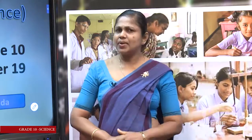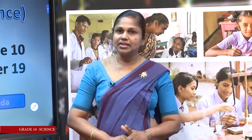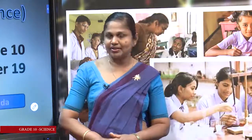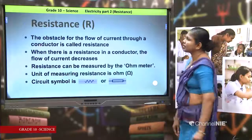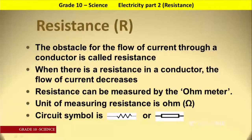Today we are going to learn the next measurement of electricity — that is resistance. The obstacle to the flow of current through a conductor is called resistance. When there is a resistance in a circuit, the flow of current decreases. Resistance can be measured by the ohmmeter. If there is no ohmmeter, we can use a multimeter, which can measure potential difference, current flow, and resistance all together.